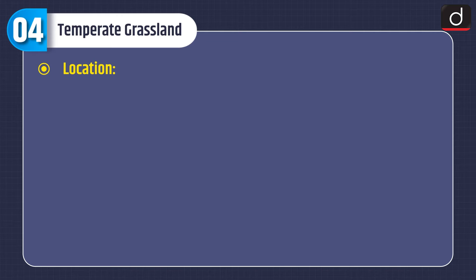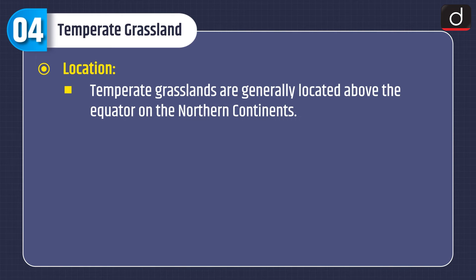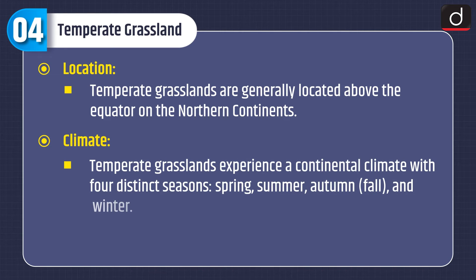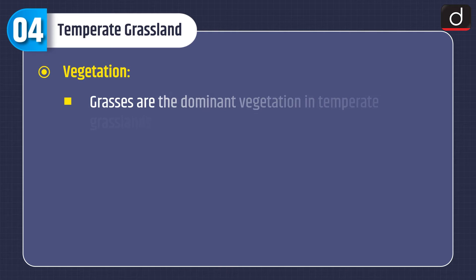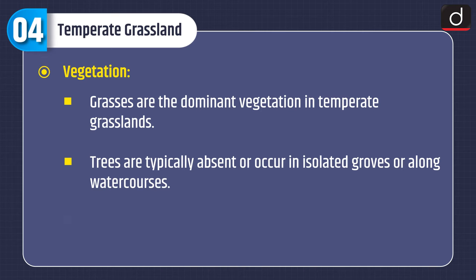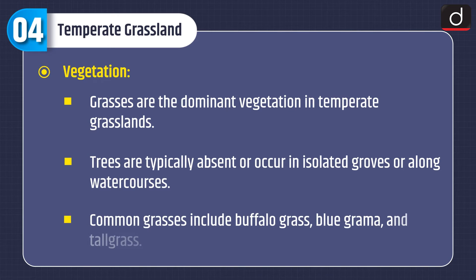Temperate grassland. Location: temperate grasslands are generally located above the equator on the northern continents. Climate: they experience a continental climate with four distinct seasons — spring, summer, autumn and winter — with moderate rainfall during the growing season and cold winters with freezing temperatures. Vegetation: grasses are the dominant vegetation; trees are typically absent or occur in isolated groves or along watercourses. Common grasses include buffalo grass, blue grama and tall grass.